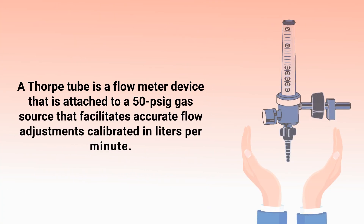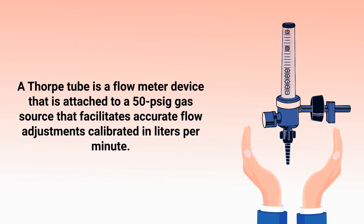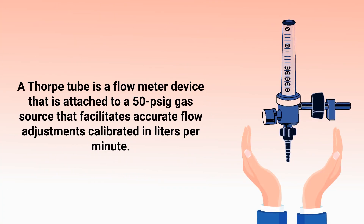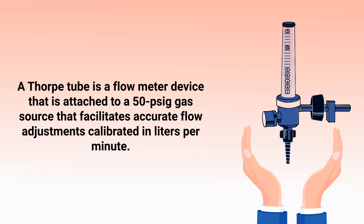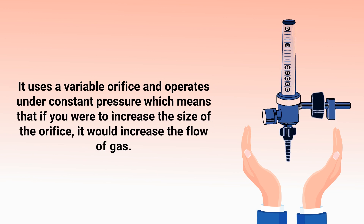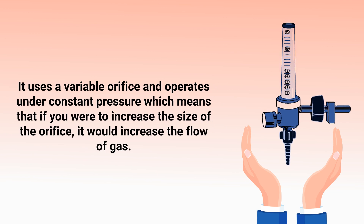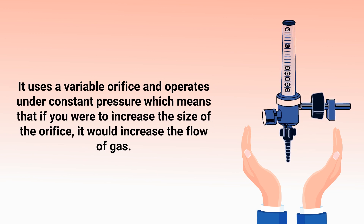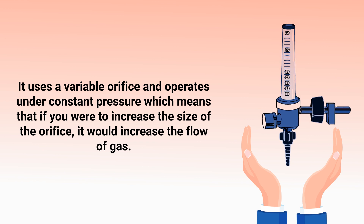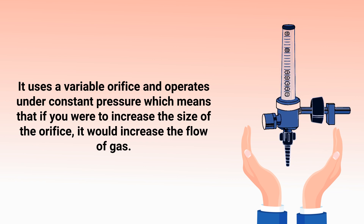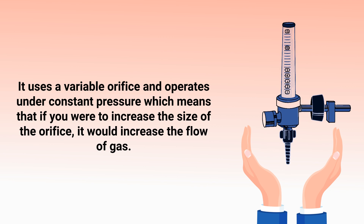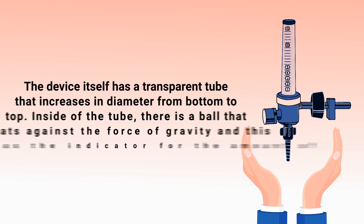A thorpe tube is a flow meter device that is attached to a 50 psig gas source that facilitates accurate flow adjustments calibrated in liters per minute. It uses a variable orifice and operates under constant pressure, which means that if you were to increase the size of the orifice, it would increase the flow of gas.